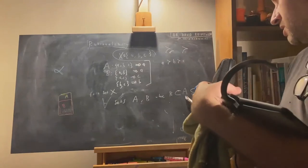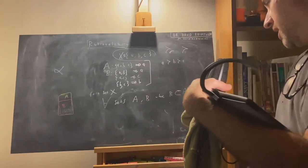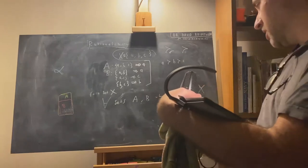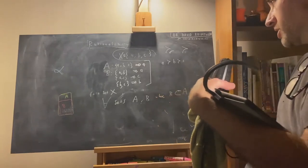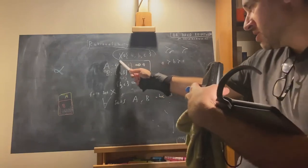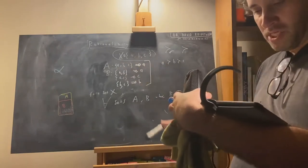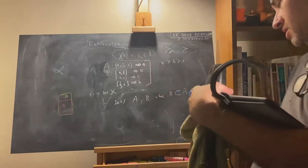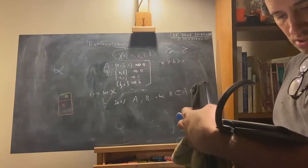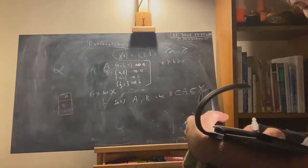And A is strictly within X - sorry, A is weakly within X. A is a weak subset of X, because every element of X is in A, but in fact in this case they are the same set. This is a stronger condition than this condition.